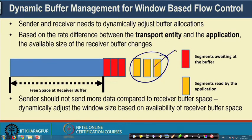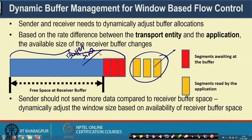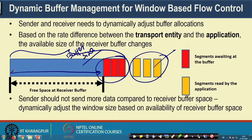In this diagram, some segments have already been read out by the application. Out of the complete buffer size, 3 segments are waiting inside the buffer for the application to read. The free space remaining in the receiver buffer must be advertised to the sender so the sender does not send more data than the receiver buffer can hold. You need to dynamically adjust the sender window size based on the availability of receiver buffer space.